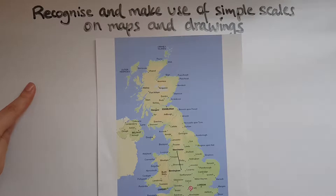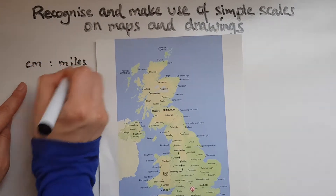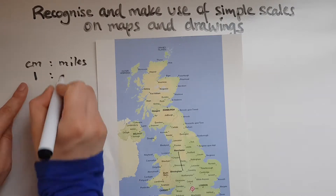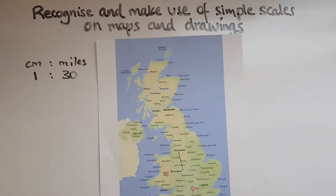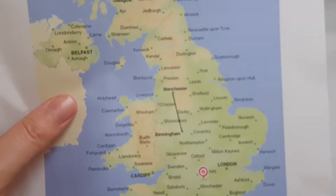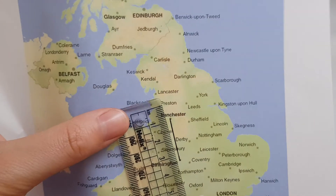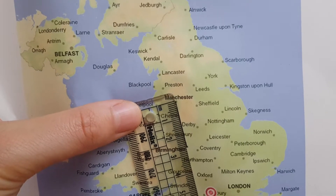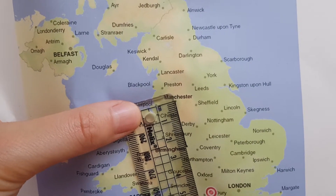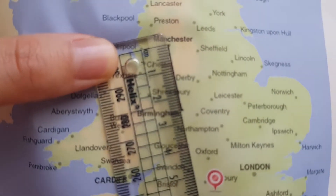I'll write the scale here: centimetres to miles, so one centimetre is approximately 30 miles. I'll start by finding the straight line distance between Birmingham and Manchester. I've drawn a straight line between the two cities and I'll measure it using a ruler. Starting from zero, the distance on the map is 2.5 centimetres.